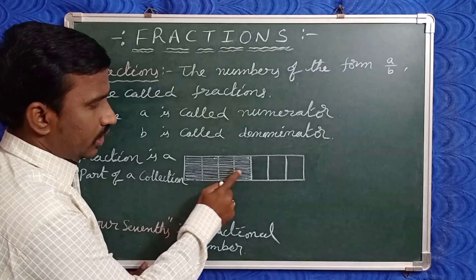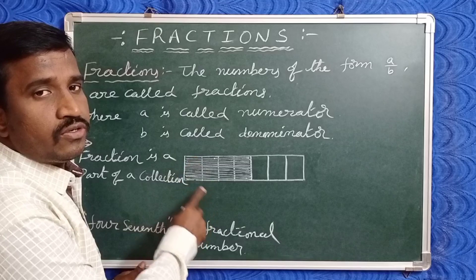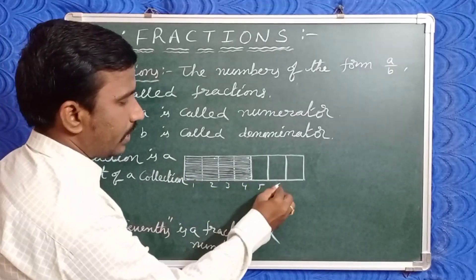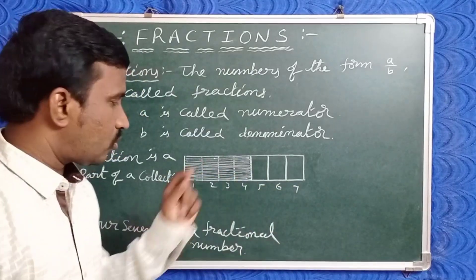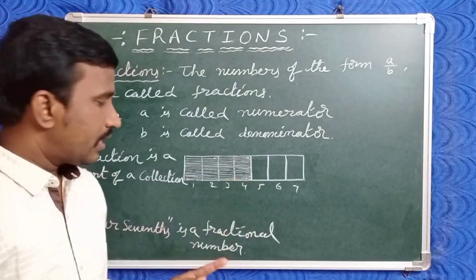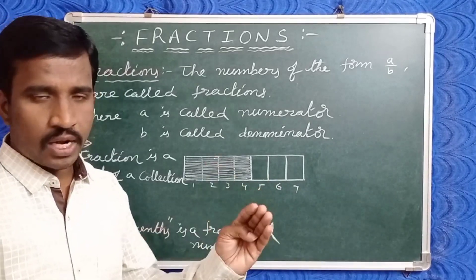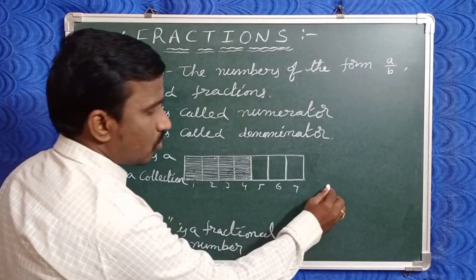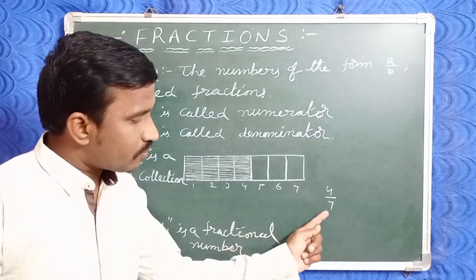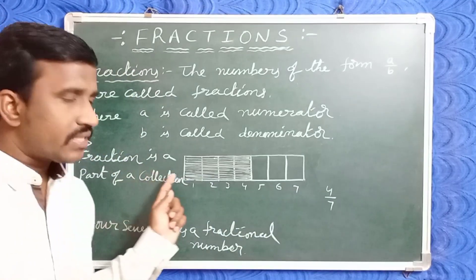Suppose we take a given object divided into seven equal parts — one, two, three, four, five, six, seven. Now out of these seven parts, we have shared four parts. So out of the total seven parts, four parts are shared. This can be written as four by seven.